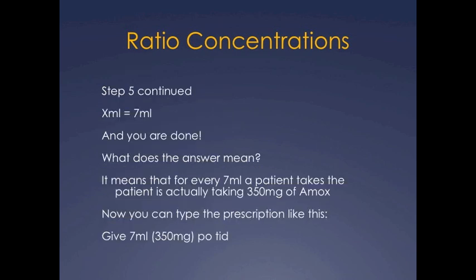Step five, continued. So after you divided 250 by 250, that equals one. One times x ml just is x ml. On the other side you divided that quantity by 250 and you got 7ml. So your answer is that x ml equals 7ml. You're done.